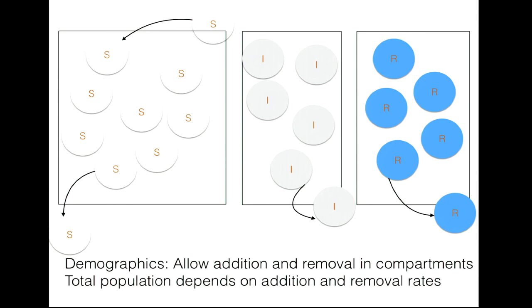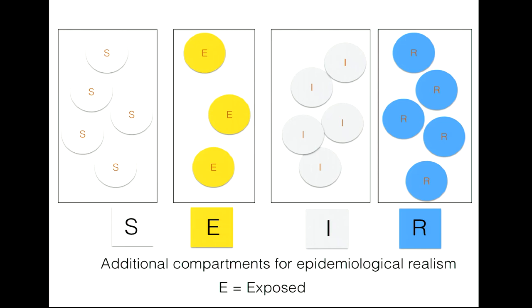To make the model more realistic, additional compartments can be added. One example is the exposed compartment E: a susceptible individual becomes exposed—they have contacted the infection but do not yet manifest symptoms clinically and cannot transfer the infection to others. So the model becomes SEIR: susceptible (S), exposed (E), infectious (I), and recovered (R). It is easy to complicate these models simply by adding different compartments to reflect the clinical stages of disease.